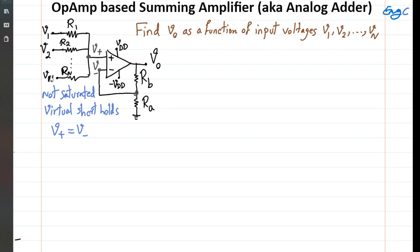With N independent input voltages, I don't need to deal with all of them at once. I can use superposition — assume V2 up to Vn are shorted, and just deal with V1 to find its contribution to Vout. I can repeat that process for V2 up to Vn. So let's do it for V1.